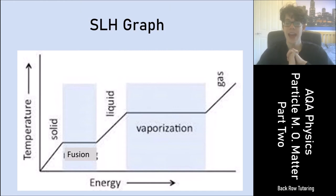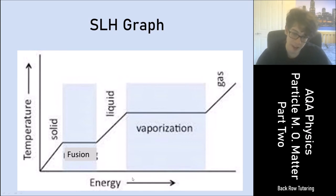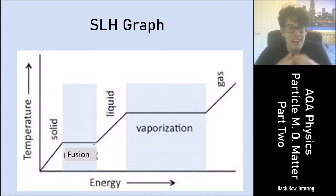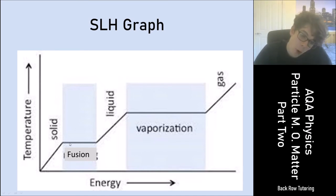Looking at the graph with energy on the x-axis and temperature on the y-axis: as you heat a solid, the temperature rises with energy input. Then you reach a point where even though you're giving more energy, the temperature stops rising and remains constant. The energy isn't going into the thermal store — it's going into the internal energy, breaking bonds and changing the solid into a liquid. Once all the solid has melted, heating the liquid causes temperature to rise again.